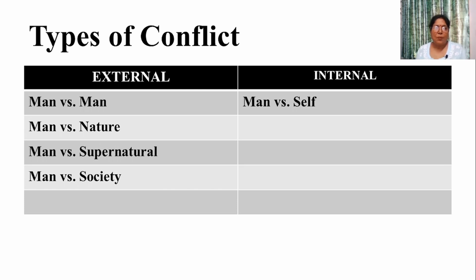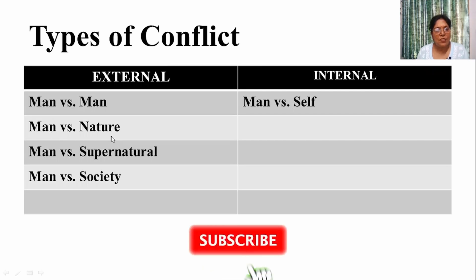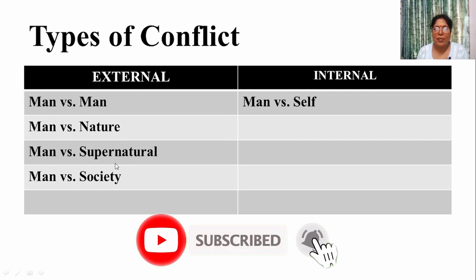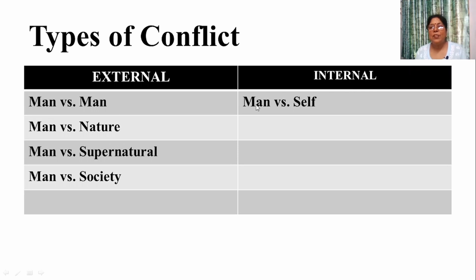The types of conflict can be summarized as external and internal. External conflict includes man versus man, man versus nature, man versus supernatural, and man versus society. Internal conflict is man versus self — meaning two opposing kinds of emotions are present and the man is going against his own self.